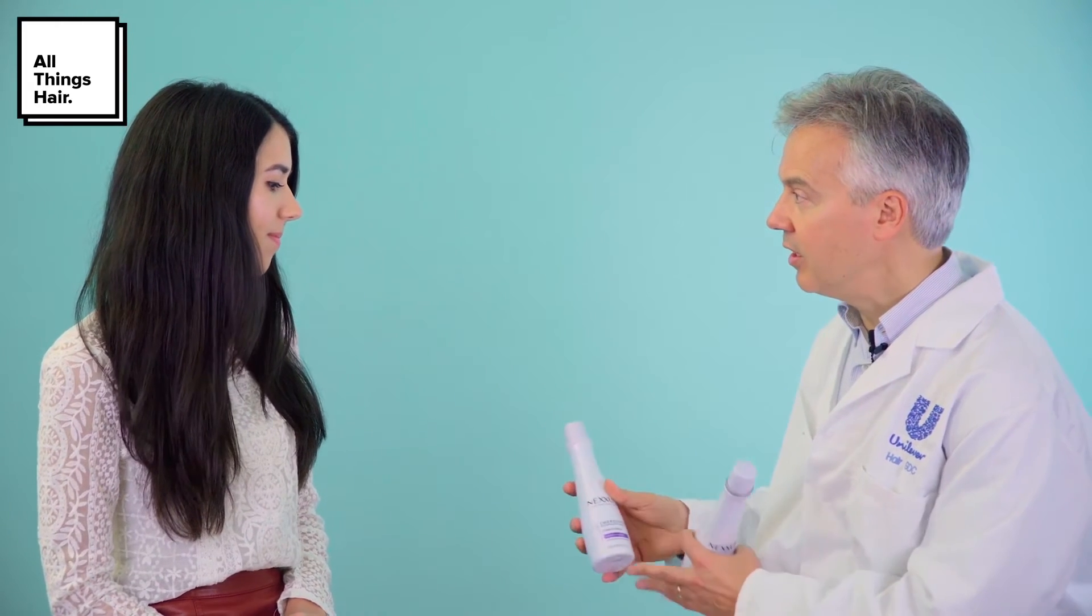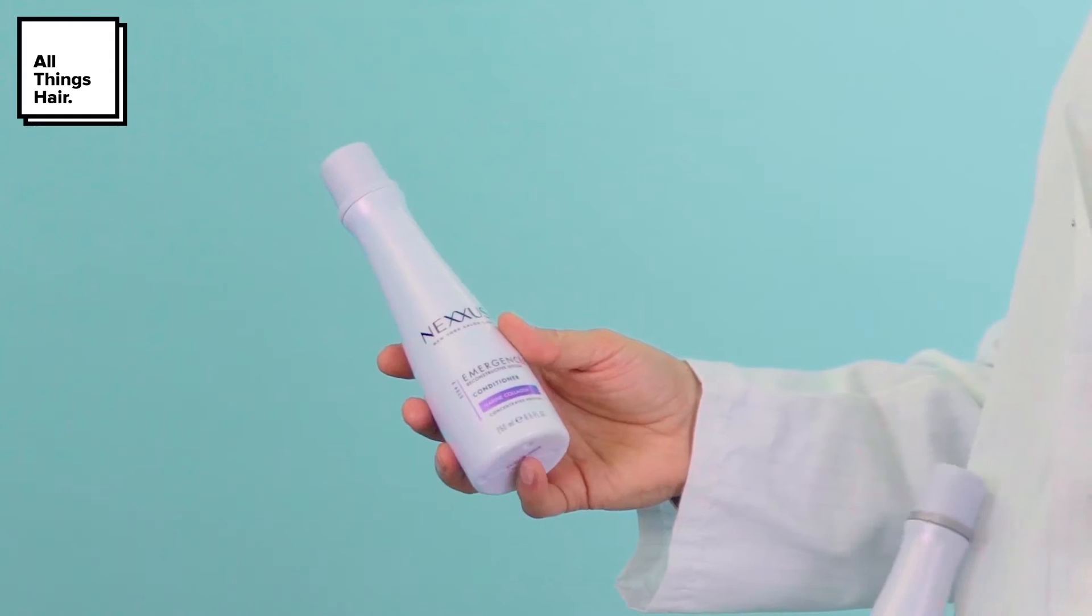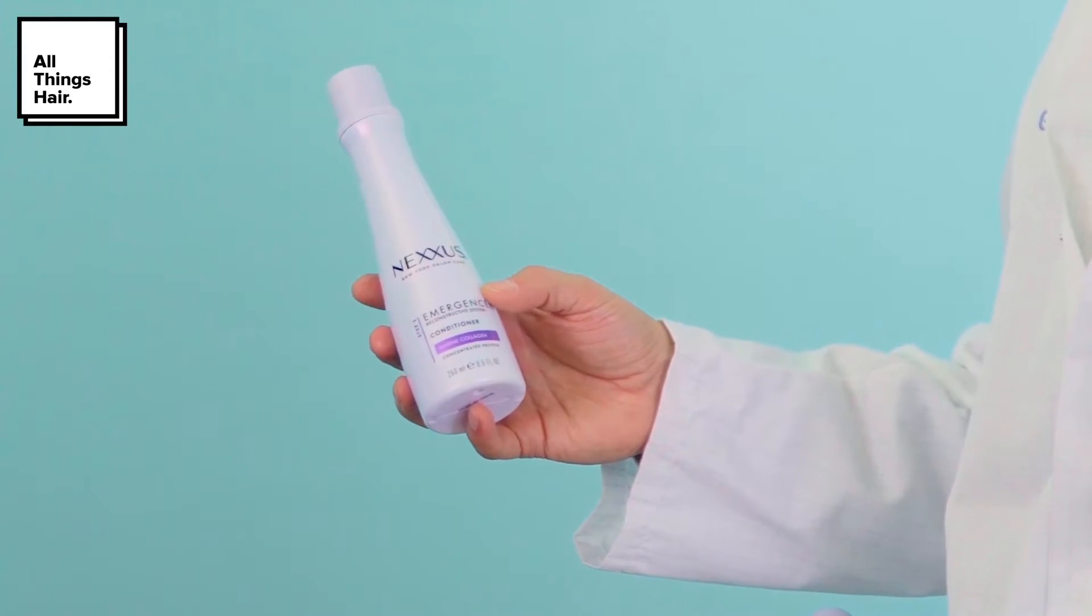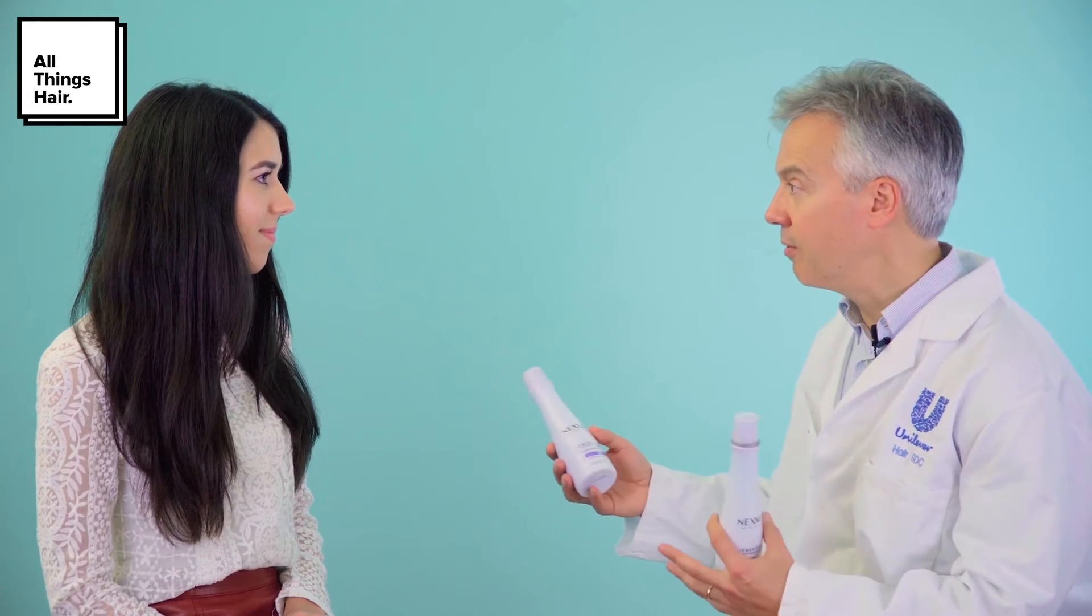Then we have the conditioner, which contains micro silicones that get deposited on the fiber surface to make the hair feel soft and smooth and flow in a fluid way.